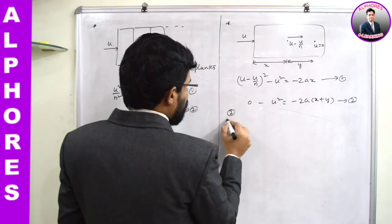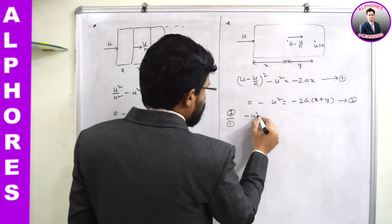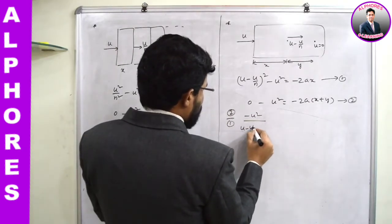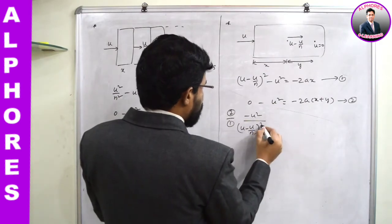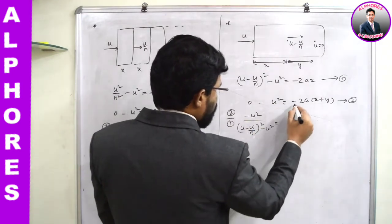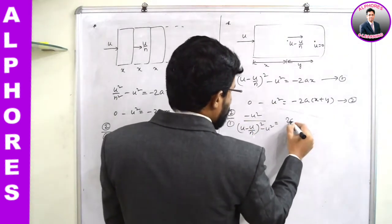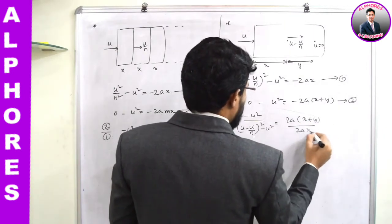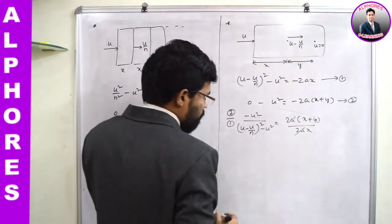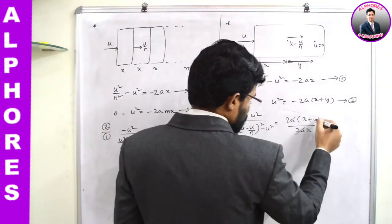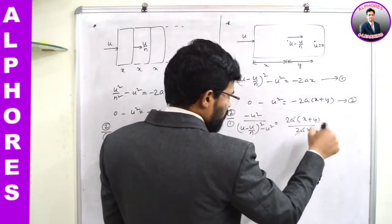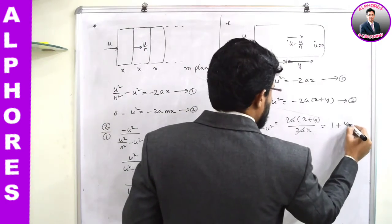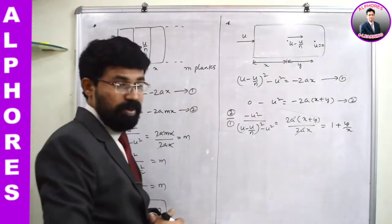Dividing equation 2 by equation 1: -u² / [(u - u/n)² - u²] = 2a(x + y) / 2ax. The 2a cancels, giving (x + y)/x, which can be written as 1 + y/x.